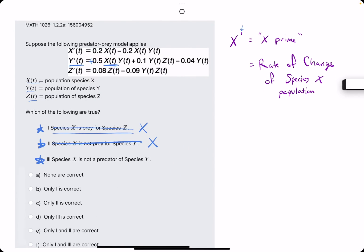Number three: species X is not a predator for species Y. That I believe is true because we just said Y is a predator for X, which means X is not a predator of species Y. So I believe that's true.